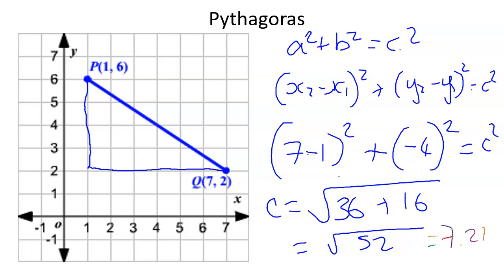So quick recap. If you need to know the length of a line on a coordinate grid like this, then you just need to work out the difference in the x values squared, the difference in the y values squared, add them together and square root, and you get the answer. It's just Pythagoras.